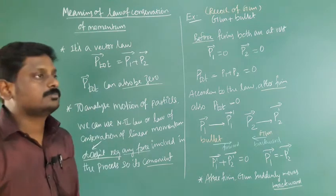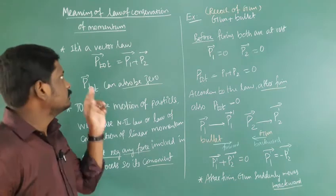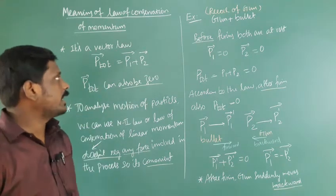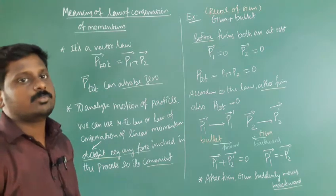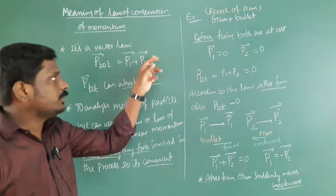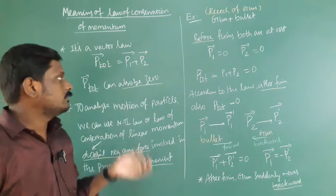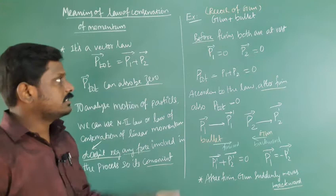So it is a vector law. If it is a vector, it has both magnitude and direction. It implies both magnitude and direction of total linear momentum is constant. P total equals P1 plus P2 equals constant. In some cases, the total linear momentum can also be zero. We will discuss one example.